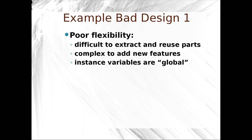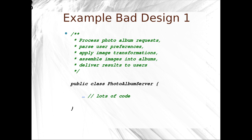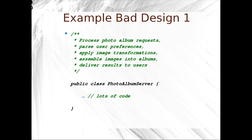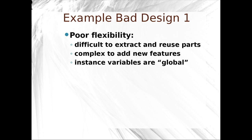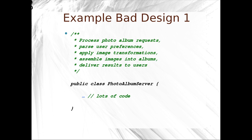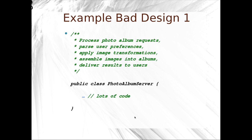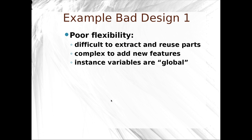That design shows poor flexibility. It's difficult to extract and reuse parts — they're all methods, if we're lucky, in one class. It's complex to add new features; we have to change methods in this one class, and the instance variables tend to be global. If this one class is responsible for everything, then probably we have one object responsible for anything, because it's unlikely that we'll have multiple photo album servers. Furthermore, it has poor testability — only basically end-to-end testing is possible, so one task in and out, that's about it. We can't really test the sub-methods very easily.